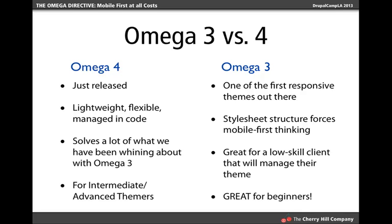Omega 4 is really for intermediate or advanced themers. It's another great base theme available alongside Zen and Adaptive Theme. Omega 3, on the other hand, was one of the first fully featured responsive base themes for Drupal when responsive became incredibly popular. It has a long tradition of being a solid base theme for responsive Drupal sites. Its stylesheet structure absolutely forces the developer to think mobile first — you have no choice.